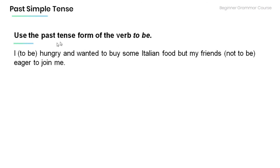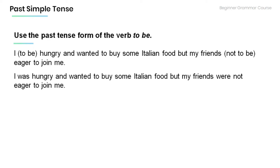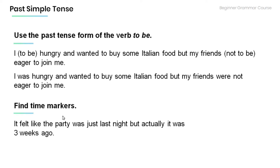Now read the following sentence and use the correct form of the verb 'to be' in the past tense: 'I was hungry and wanted to buy some Italian food, but my friends were not eager to join me.' Look at the sentence below and find the time markers: 'It felt like the party was just last night, but actually it was three weeks ago.' Time markers: last night, three weeks ago.